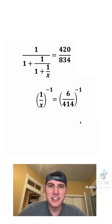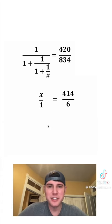Smush this over. Do both sides to the negative 1 exponent. Flip both of the fractions. Drop the parentheses. X over 1 is equal to X. And 414 over 6 is equal to 69.